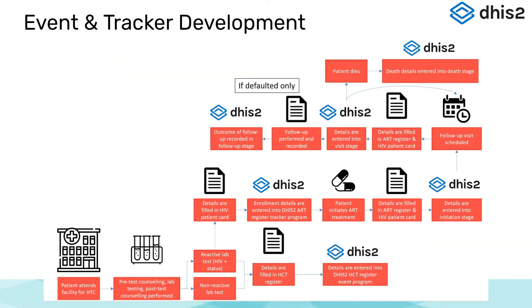In the development and deployment of event and tracker programs, we have already learned a lot. Some of the major lessons learned include the difference in complexities of data flow between individual data collection and aggregate data collection. Tracking people or commodities is much more complex, and a lot more thought needs to go into the design phase. It's also not a process that can be easily transferred, as there may be many different data flows between and even within countries.